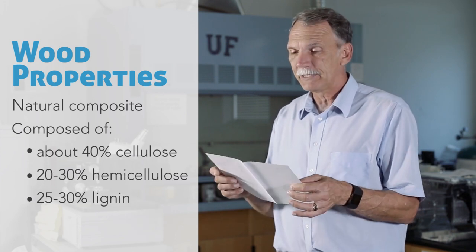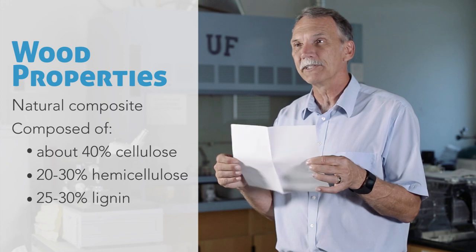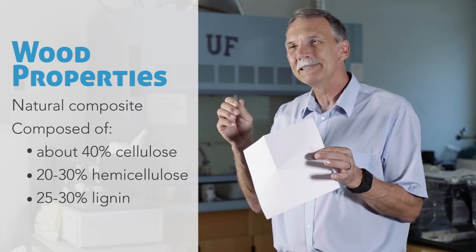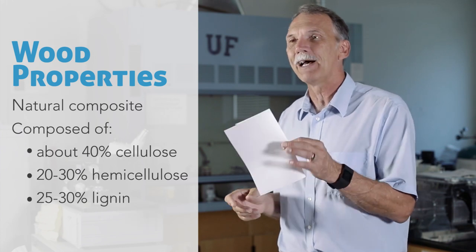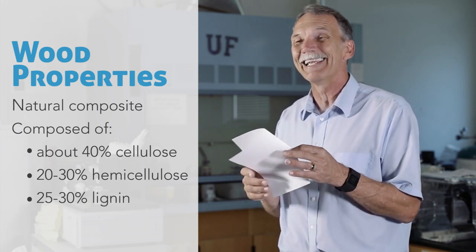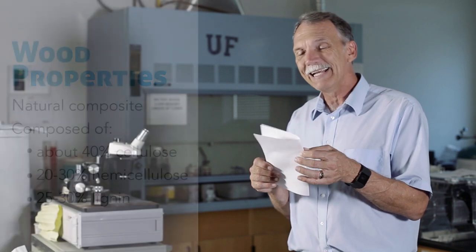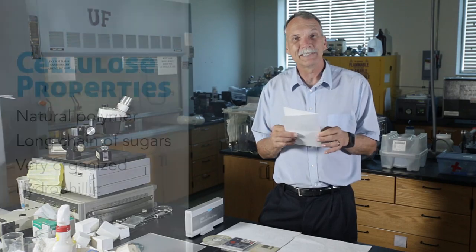40% cellulose, about 20 to 30% hemicellulose, which is sort of disorganized random chains that are smaller of the cellulose, and more importantly, it's about 25 to 30% lignin. Lignin is the contaminant in wood that you have to try to get rid of or deal with.